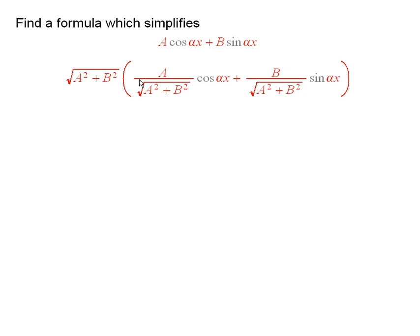This is what we did. We divided by the square root of a squared plus b squared. We multiplied by the square root of a squared plus b squared.